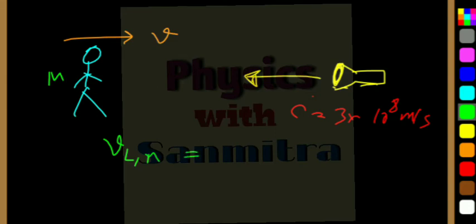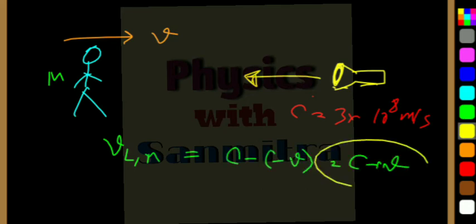So according to the laws of classical physics, what we can do is that we can do c minus minus v, that is c plus v. But actually that is not true. Velocity of light with respect to man, that is also c.